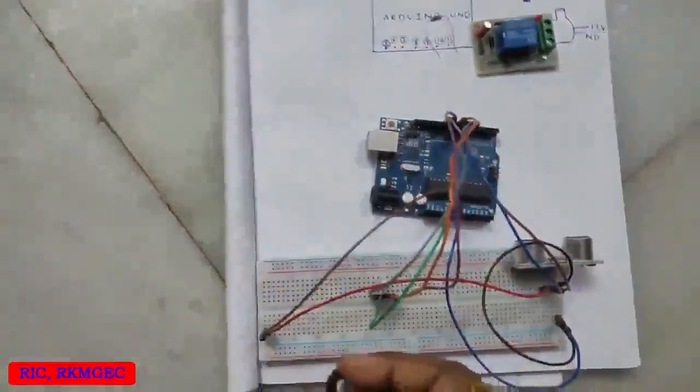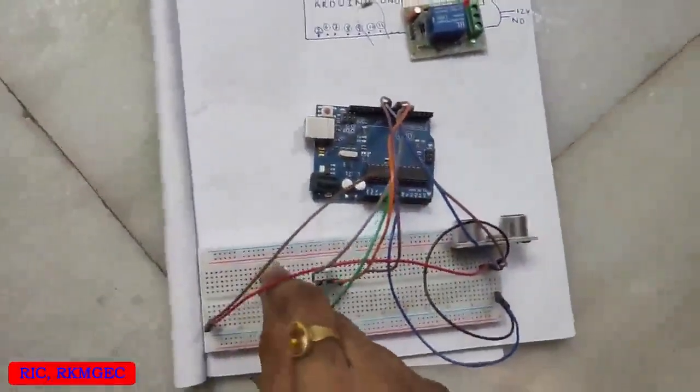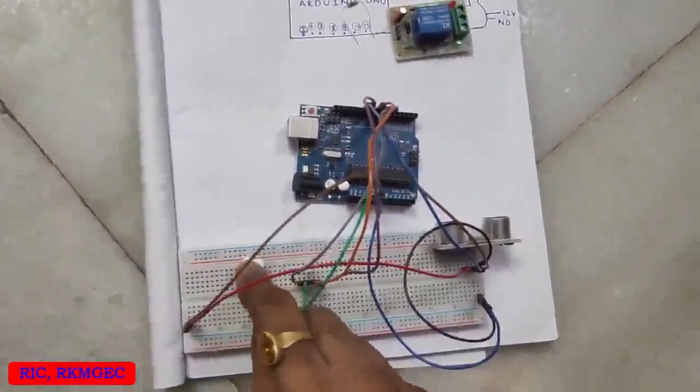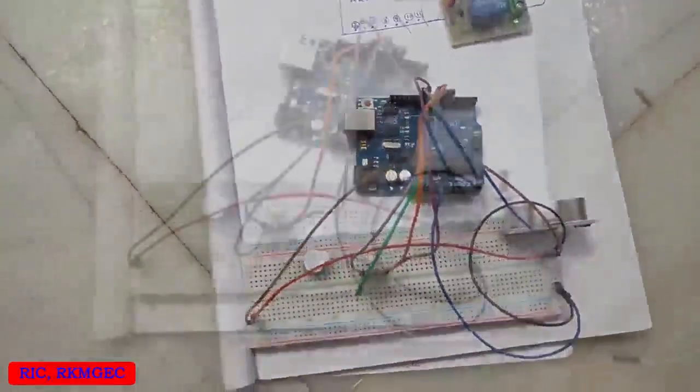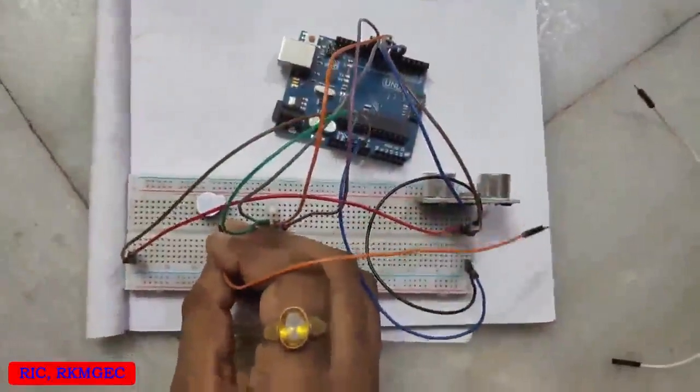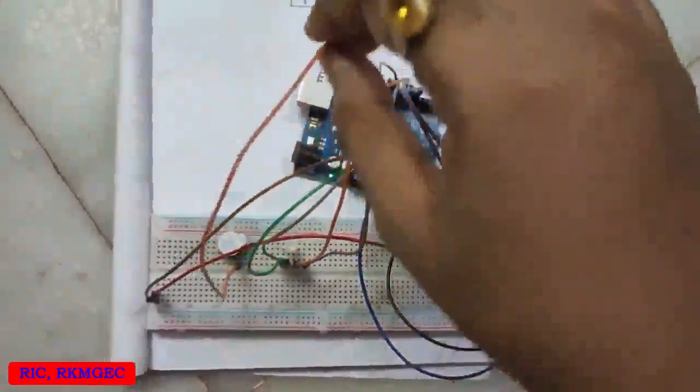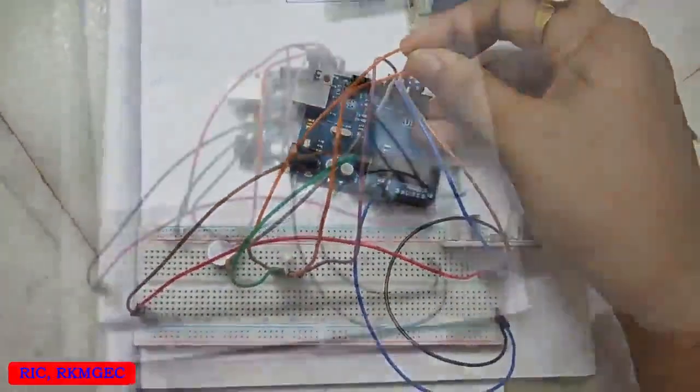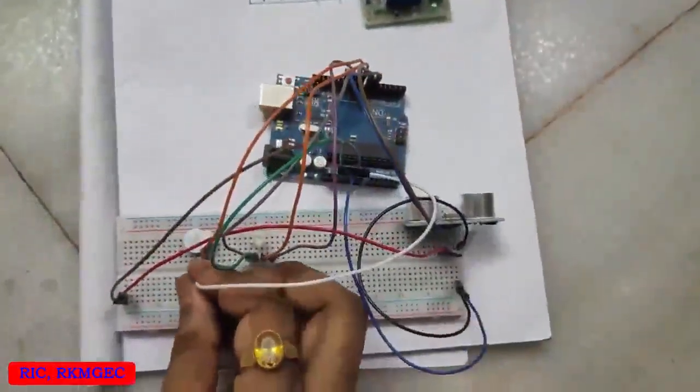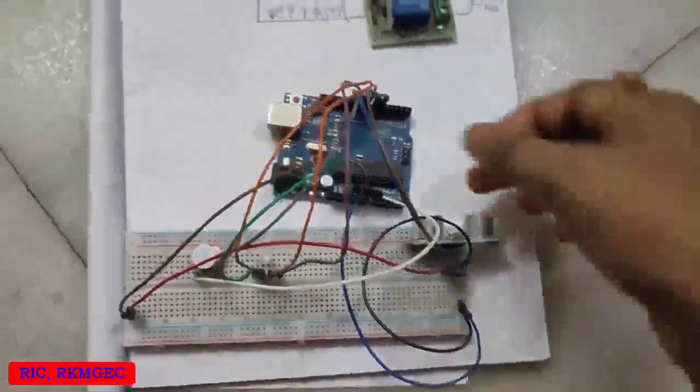Now let's connect the buzzer. Connecting the positive terminal of the buzzer with 9th pin, and the negative with the ground.